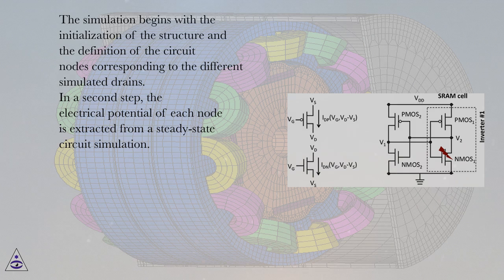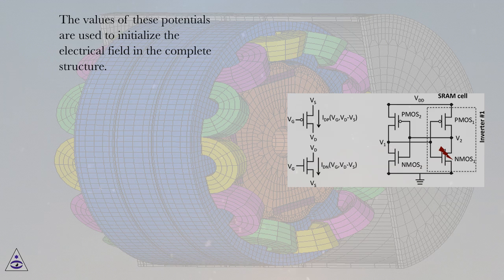In a second step, the electrical potential of each node is extracted from a steady-state circuit simulation. The values of these potentials are used to initialize the electrical field in the complete structure.